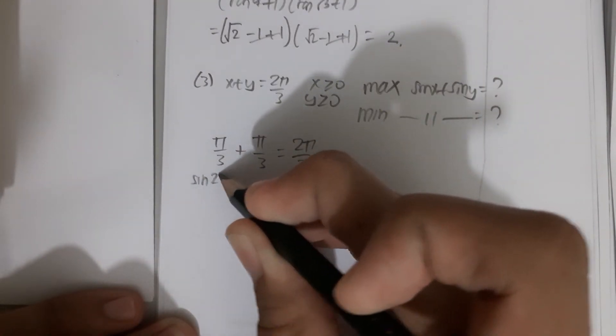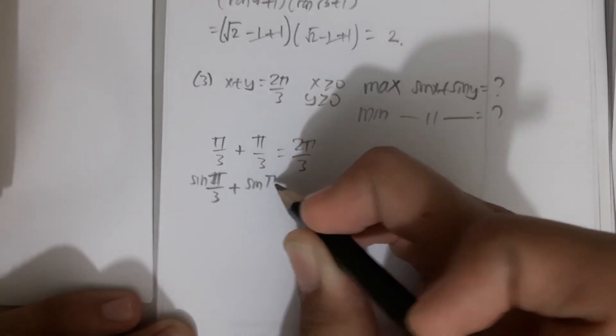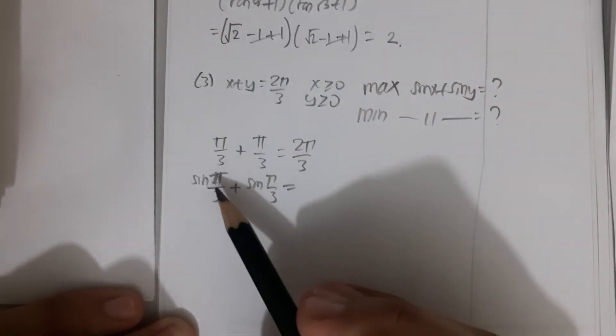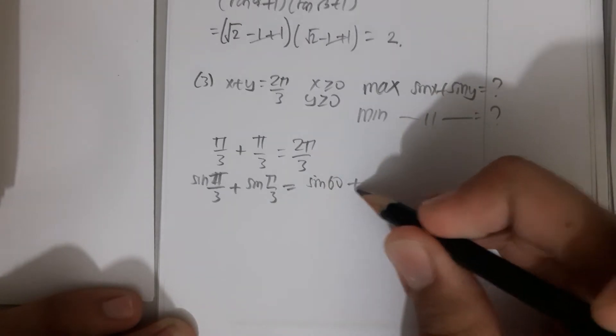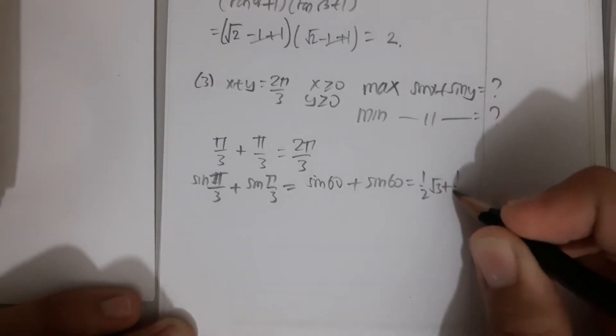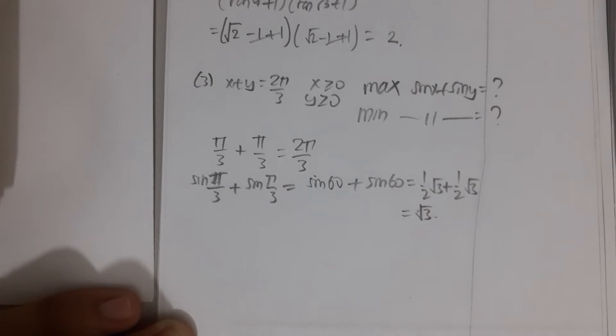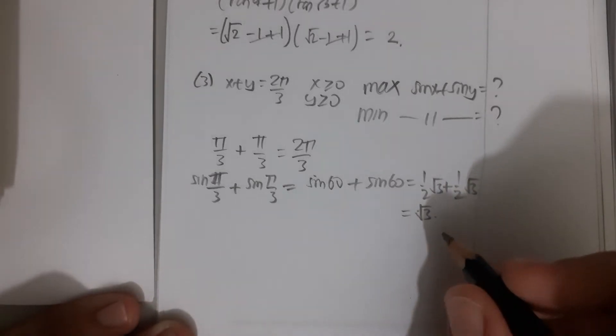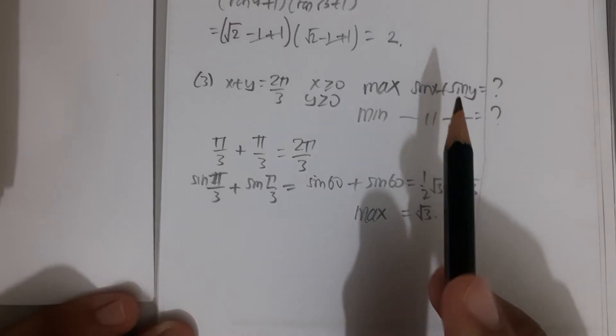sin(π/3) is sin 60°. So sin 60° + sin 60° = (√3)/2 + (√3)/2 = √3. That is the maximum of sin x + sin y.